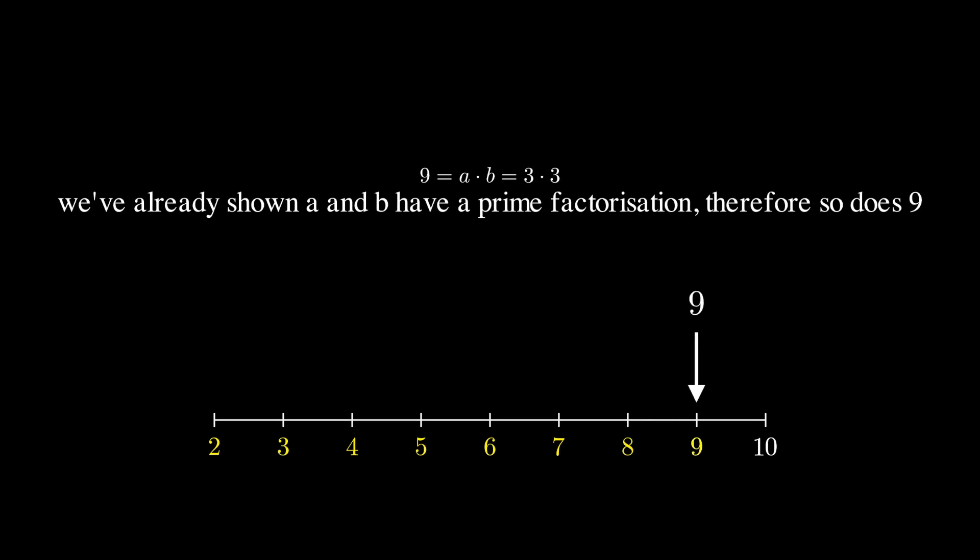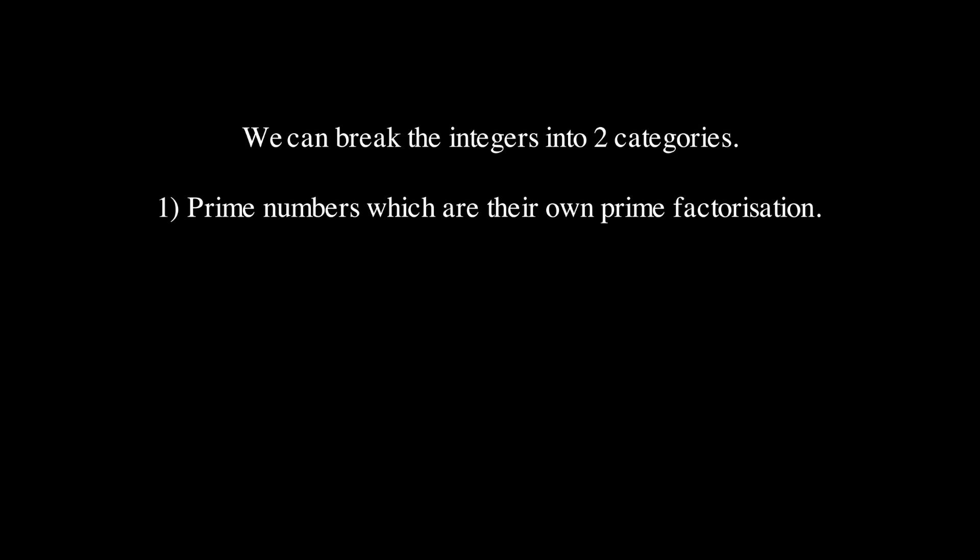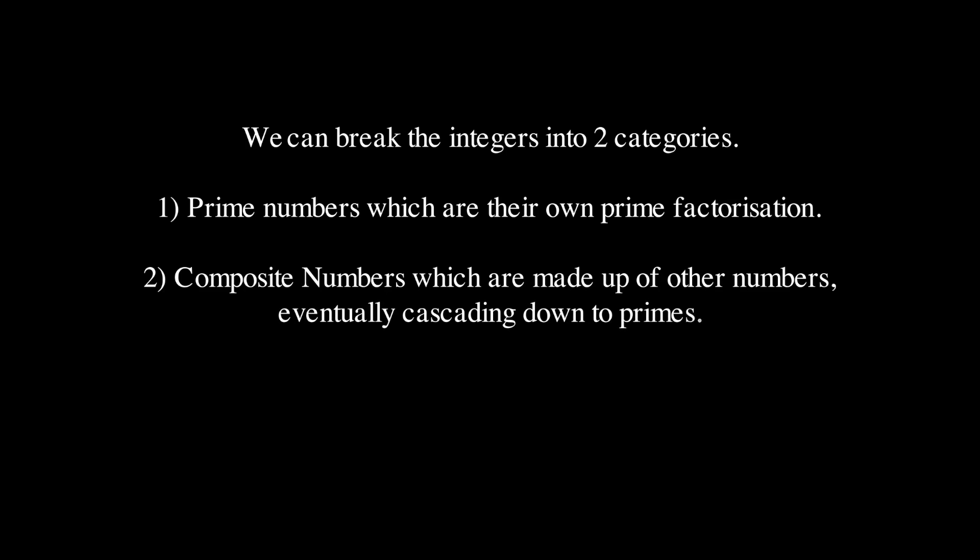This pattern continues indefinitely. In other words, we can separate the integers into two categories. Prime numbers, which are the foundations of our tower, and composite numbers, which are built up using other numbers. If you follow these numbers back far enough, you'll wind up at the prime numbers.